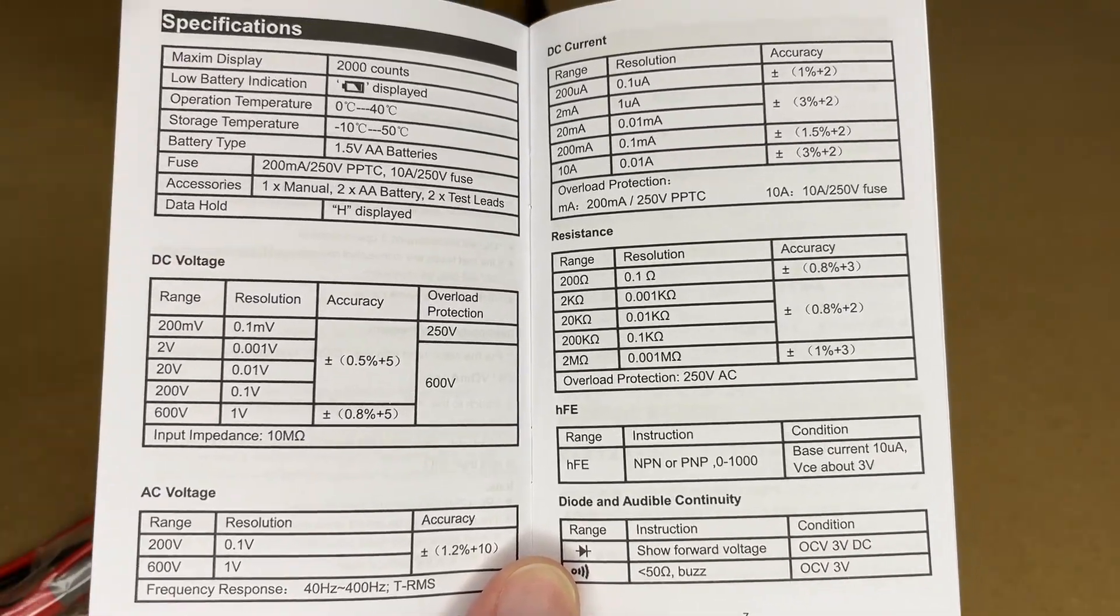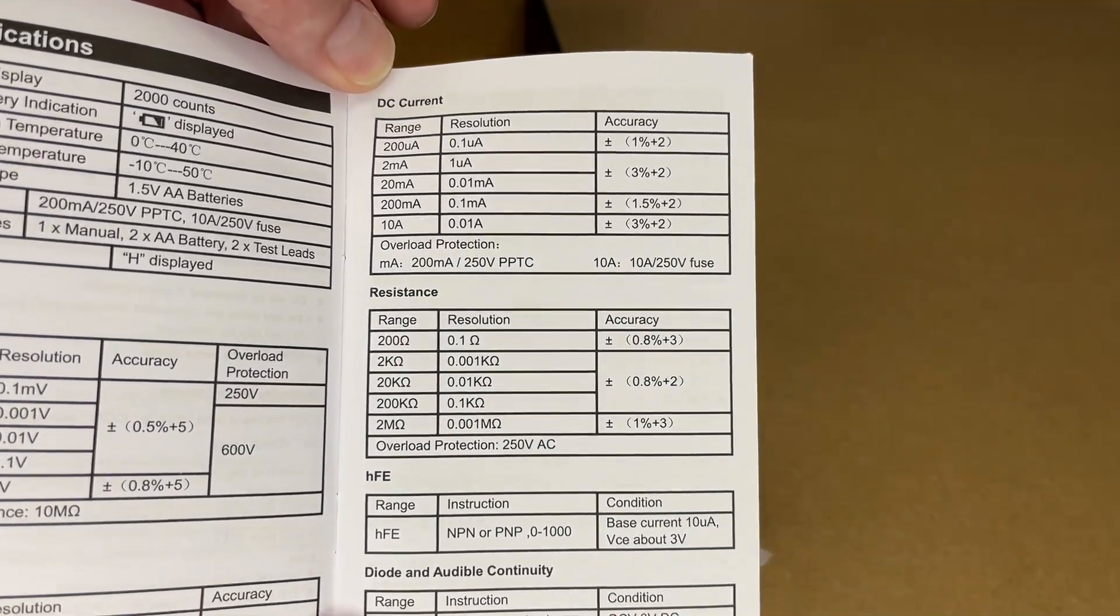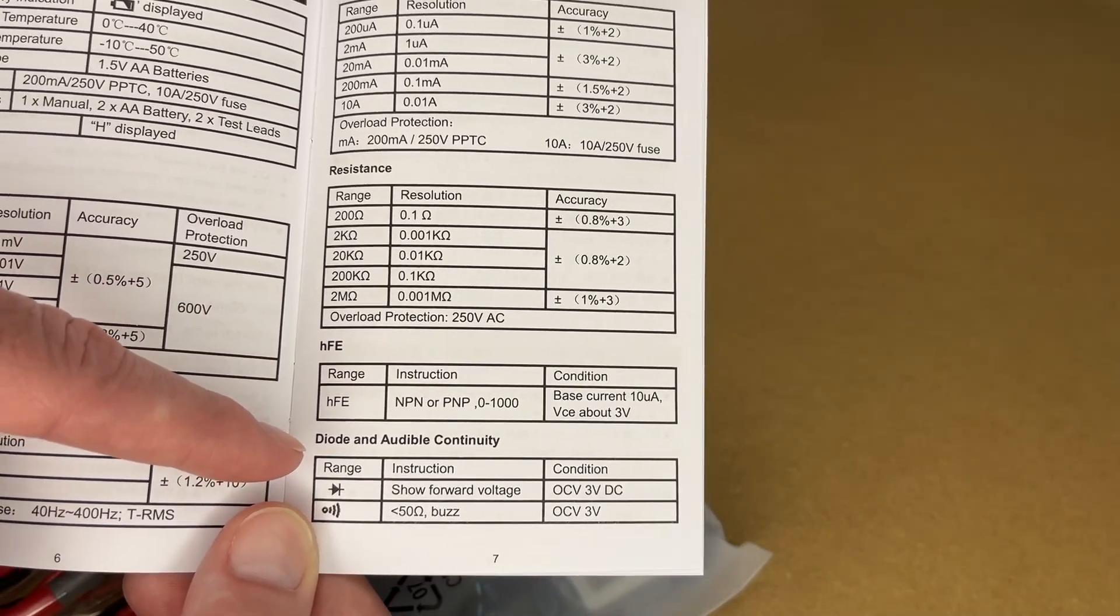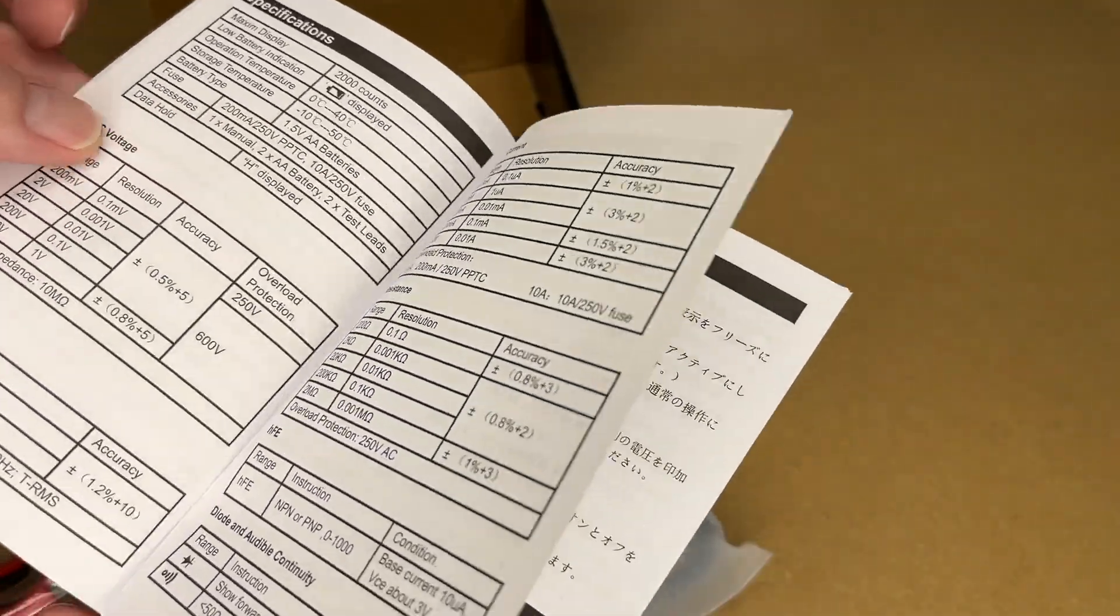This can measure DC voltage, AC voltage, DC current, resistance, HFE (that's related to transistors), diode and audible continuity. And that's everything for the manual.